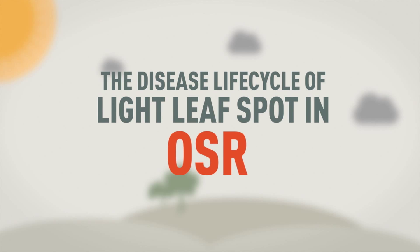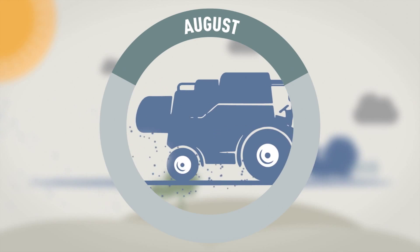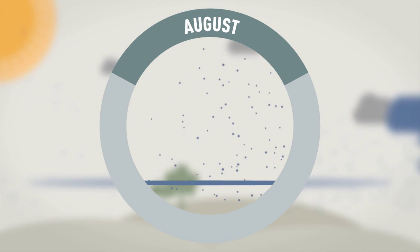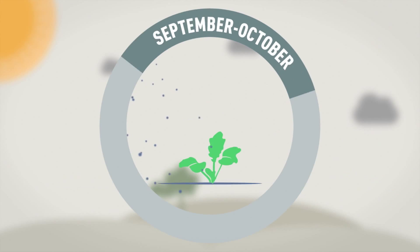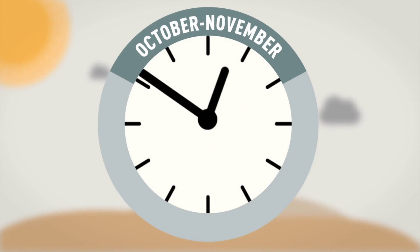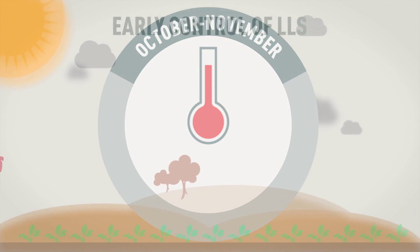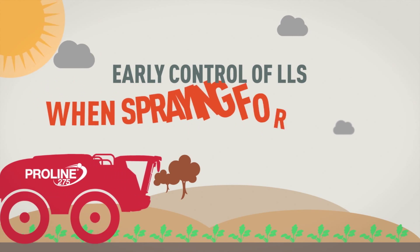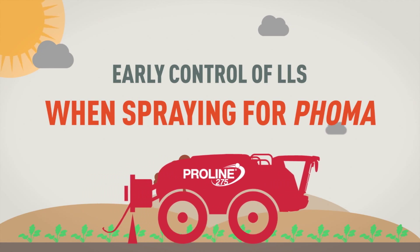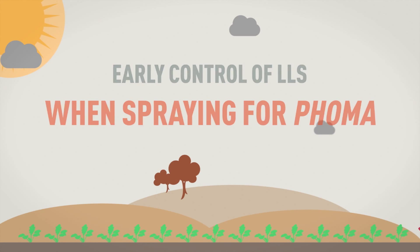The disease life cycle of lightleaf spot in oilseed rape. Ascospores from lightleaf spot infected pods and stems are released during harvest and from stubble debris. As new rape plants emerge, the young leaves are susceptible to infection from windblown ascospores. Infection of new tissue can occur with as little as 6 hours of wetness at 12 to 20 degrees Celsius. Early control of lightleaf spot can be achieved by using treatments which are effective against the disease, such as proline, when spraying for FOMA.